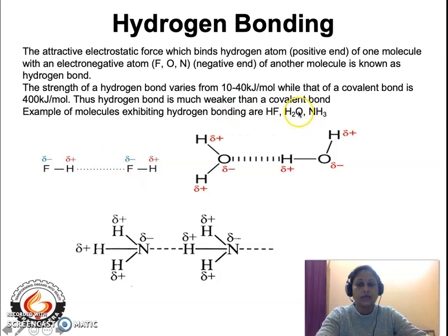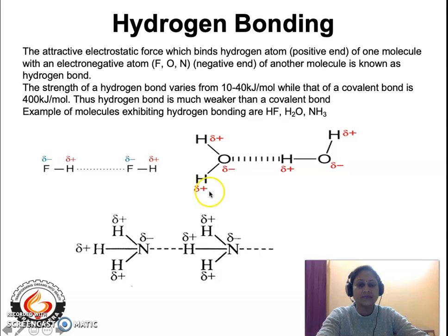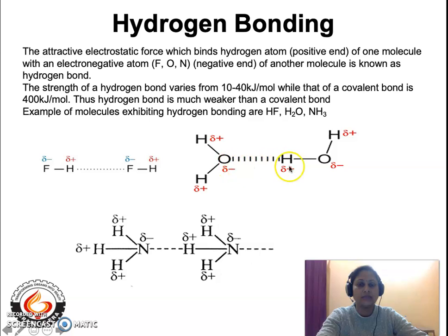Another example is water molecules. Water is a typical example of a molecule exhibiting hydrogen bonding. The water molecule has a bent shape or V-shape as per VSEPR theory. One water molecule will exhibit hydrogen bonding with another water molecule — oxygen is the electronegative element and hydrogen is the electropositive element. The bond existing between oxygen and hydrogen is designated in dotted lines and is known as hydrogen bonding.